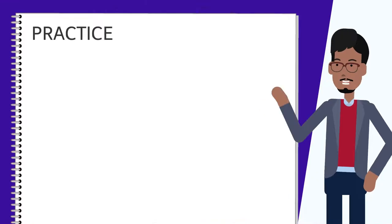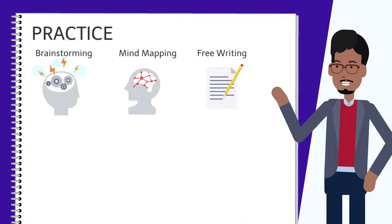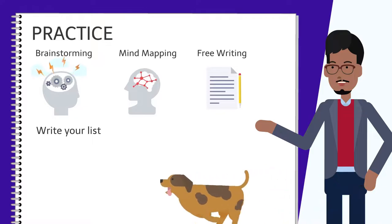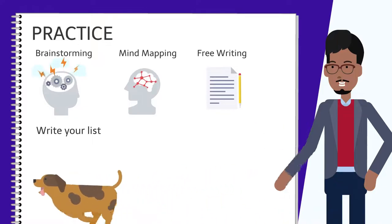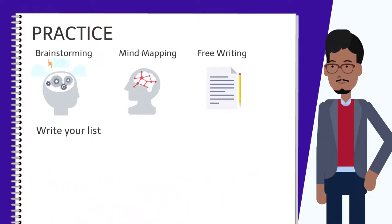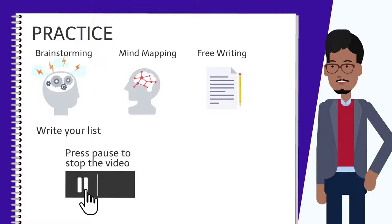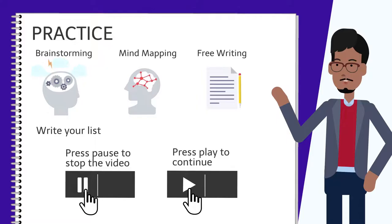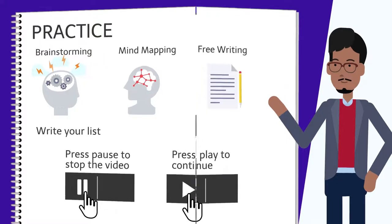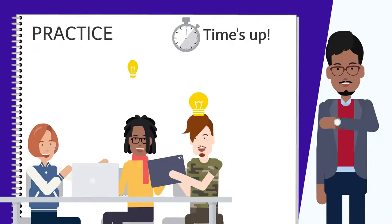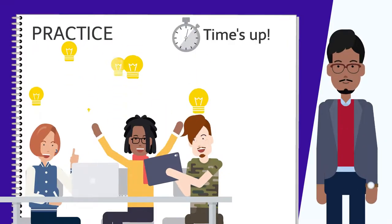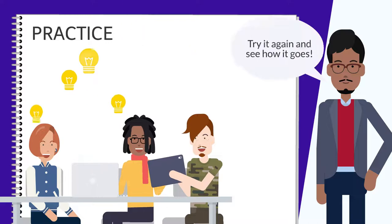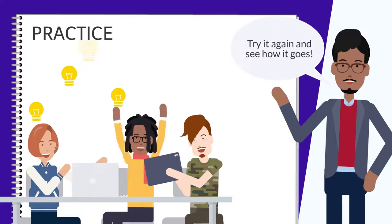Let's practice. Pick one of the three idea generators and write down anything and everything related to the topic of dogs, even if it's a bit crazy. Press pause to stop the video and write your list. Press play when you're ready to continue on. Time's up — what does your list look like? Is it full of ideas? If not, don't worry. This takes practice. Try it again and see how it goes.